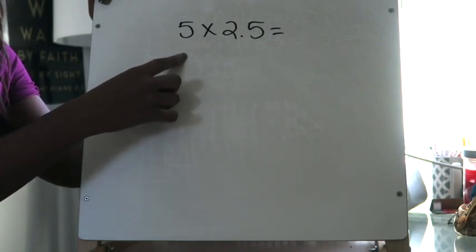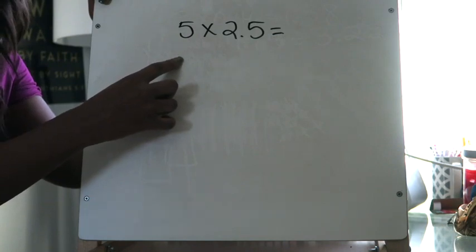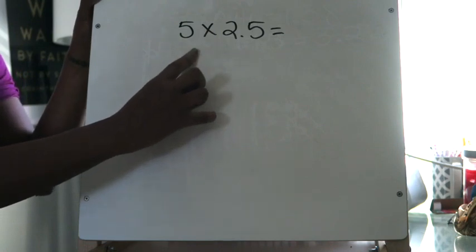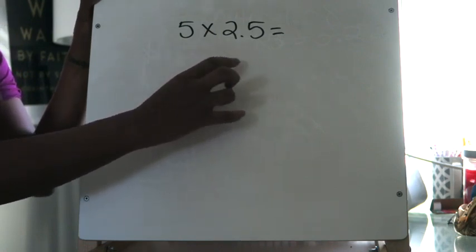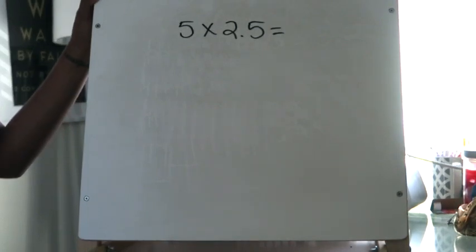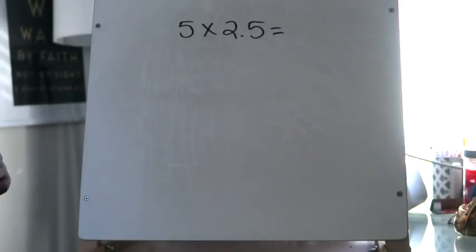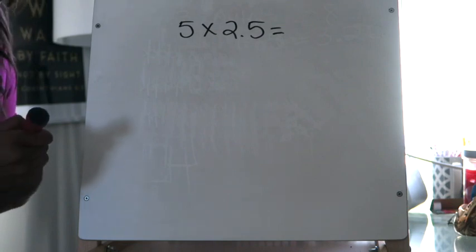When dealing with the distributive property, the first thing you want to do is take each of your factors — remember, factors are the numbers being multiplied. So 5 is a factor and 2 and 5 tenths is a factor — and break your factors down into their place value positions. In this example we're going to break down 2 and 5 tenths, because 5 is just a whole number by itself. So I'm going to rewrite 5 times 2 and 5 tenths using the distributive property.